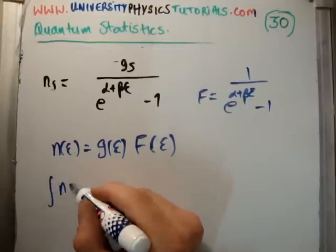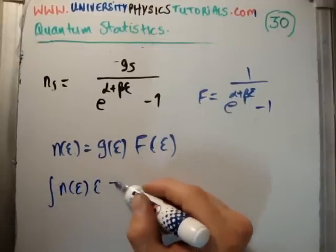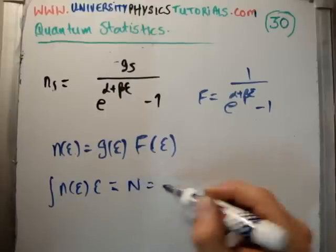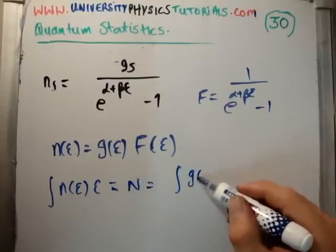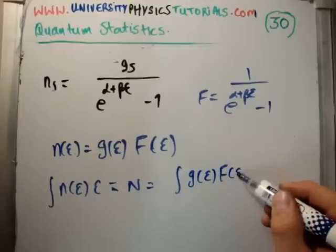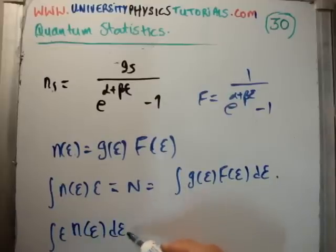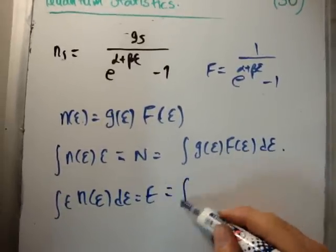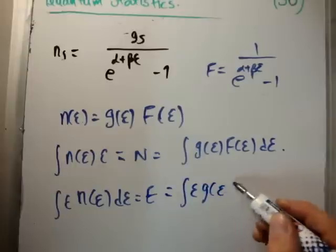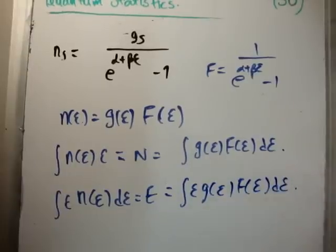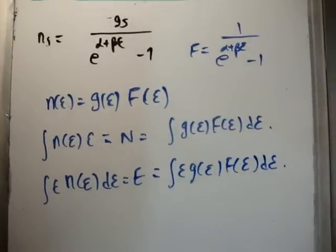To get the total number of particles we integrate n(E) dE, which equals the integral of g(E) times f(E) dE. That's all I have to say about that. Thanks for watching — please pass it on to your friends, subscribe to my channel, and you might also visit universityphysicstutorials.com.